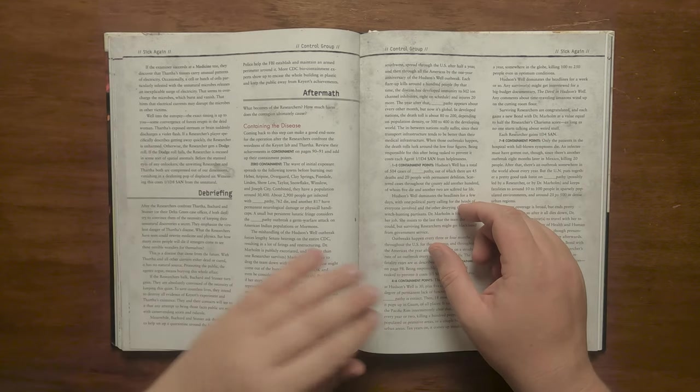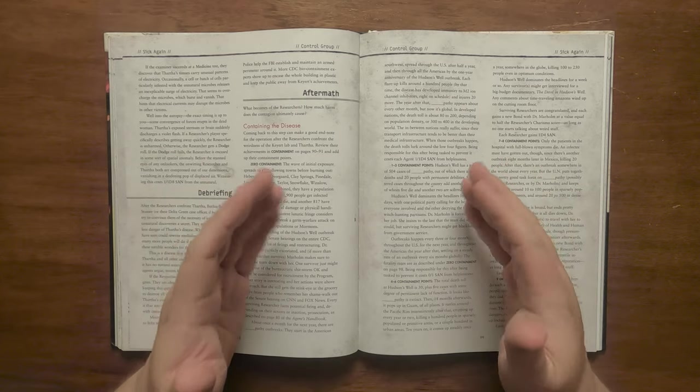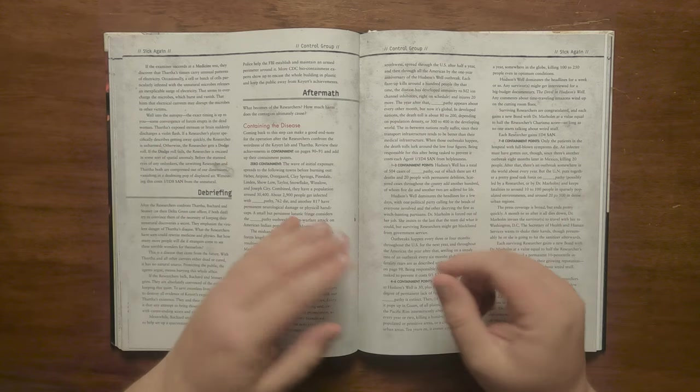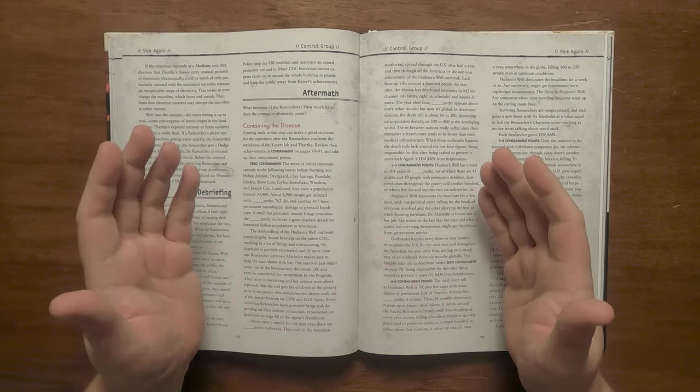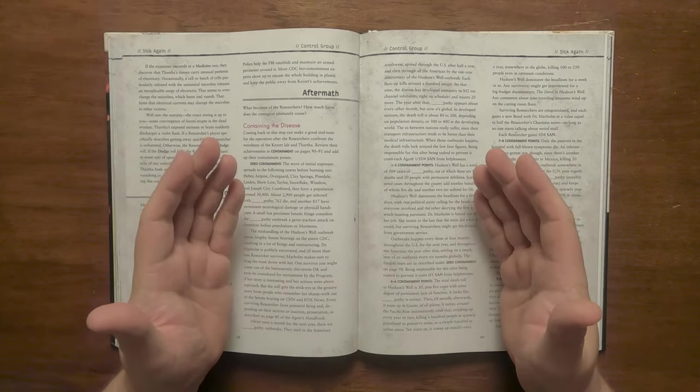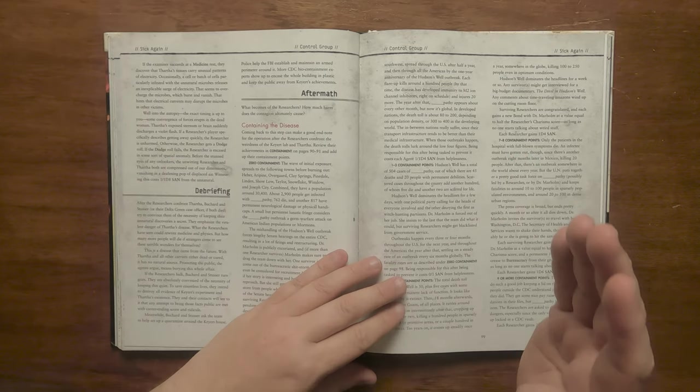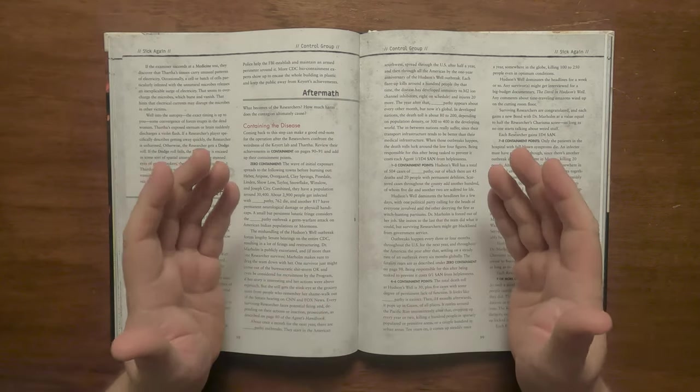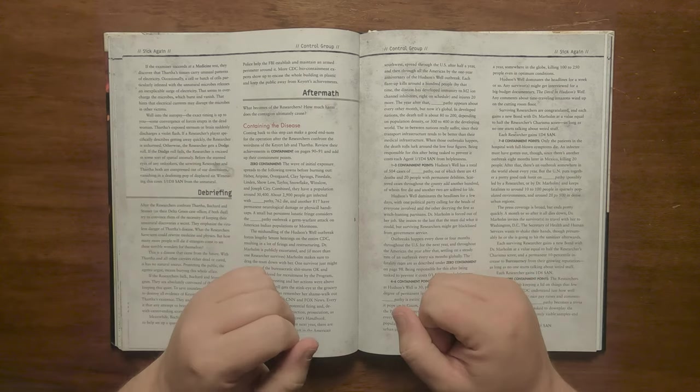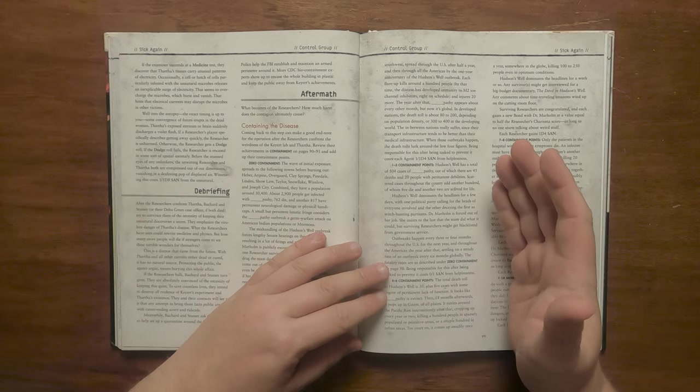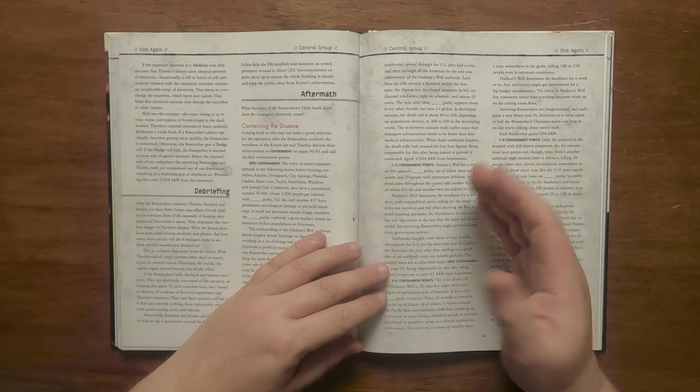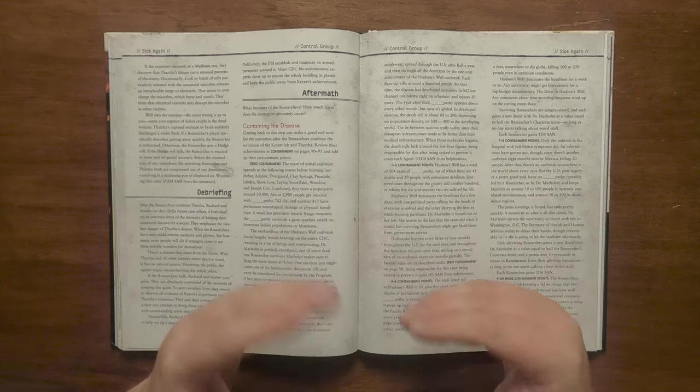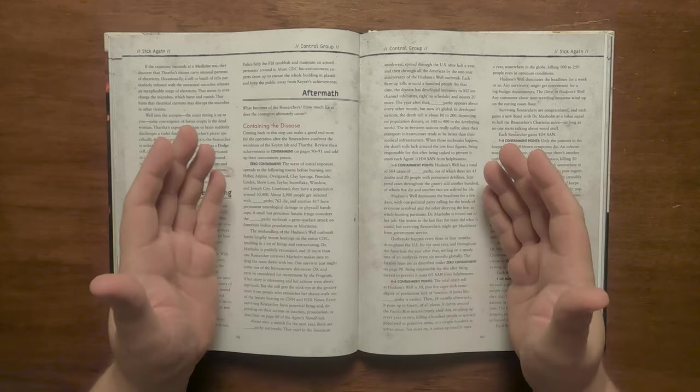Providing the researchers have confronted Thartha, Bouchard and Stusser or even their case officer if both have died, they will attempt to convince the researchers of the importance of keeping their discovery a secret as what they have witnessed could rewrite medicine and physics. They will be reminded of the threat that many more people could die. The disease is from the future and thus, with everyone who carried it either dead or cured, there is no vector for carrying it. Protecting the public and keeping them ignorant means burying the whole thing. Should the researchers remain unconvinced, then the Delta Green agents will take on a grim tone. They intend to destroy all of the work of the physicists and the existence of Thartha and will ensure that those researchers making things public are met with the kind of scorn and ridicule that will end their careers. The agents will rope in the police to establish a quarantine around the physicist's house and CDC biocontainment experts will arrive to wrap the building in plastic and keep the public away.